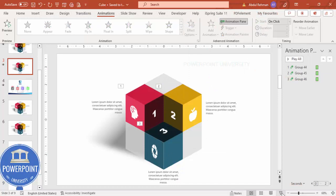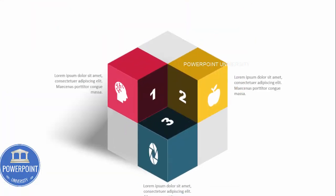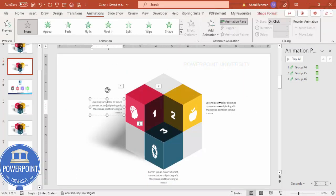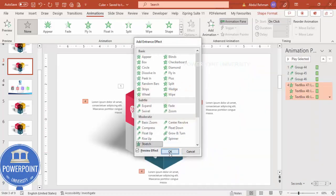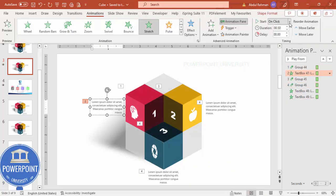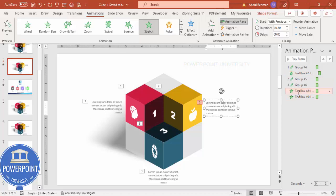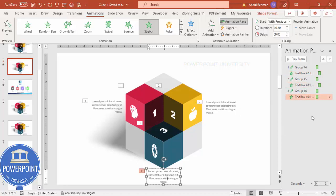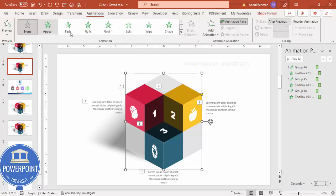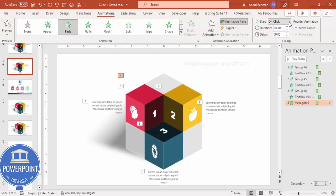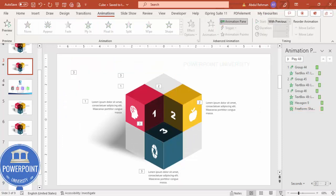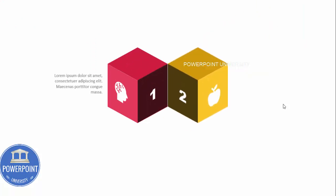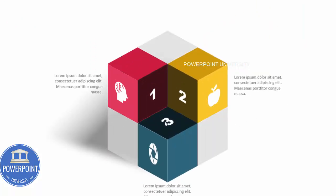Play the animation: cubes appear one, two, three. Then select the detail text boxes and add animation — More Entrance Effects > Stretch. Set each text animation to After Previous so they follow their respective cube. Select the number/icon group and add a Fade animation set to After Previous. Finally, set the shadow shape to Fade with Previous. Playing back shows the full sequence with all elements animating smoothly.